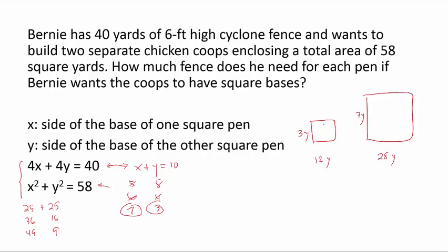And the area of the first one will be 9 square yards. And the area of the second one will be 49 square yards. We can also use some algebra to confirm that this solution is unique.